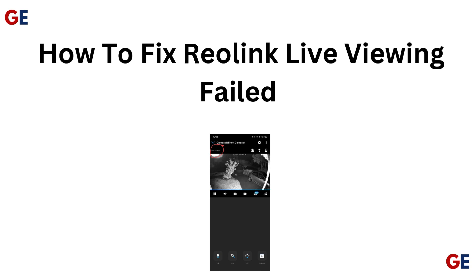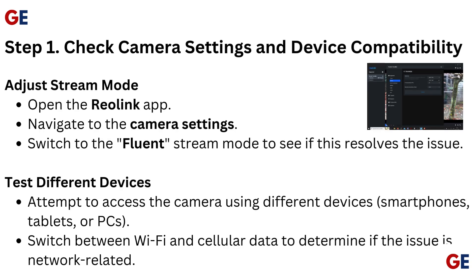How to fix Reolink live viewing failed. Step 1: Check camera settings and device compatibility. Adjust stream mode — open the Reolink app, navigate to the camera settings, and switch to the fluent stream mode to see if this resolves the issue.